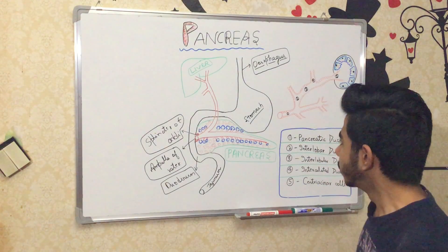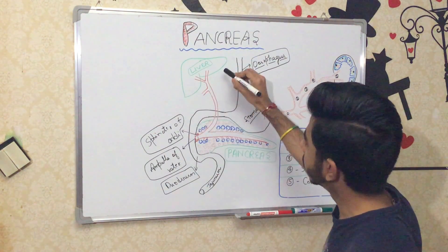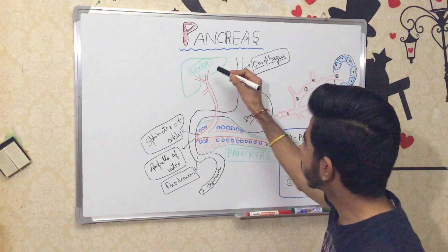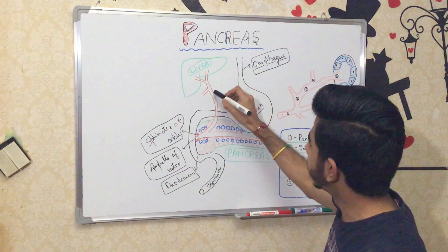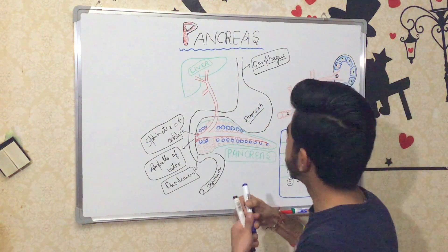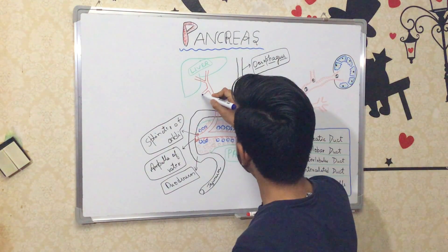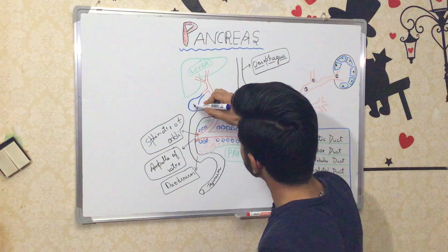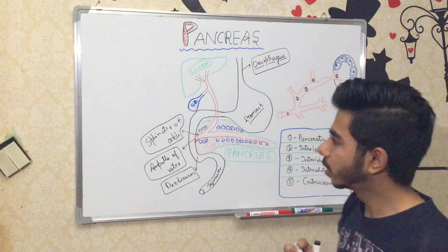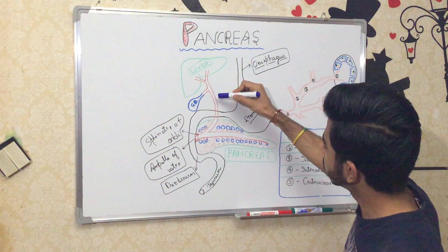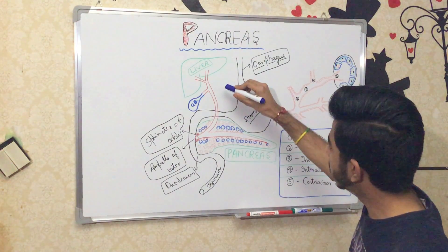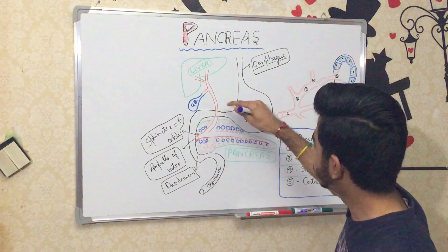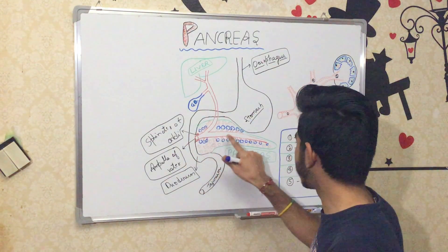Here I have drawn the liver with the left hepatic duct and right hepatic duct, which meet at the common hepatic duct. The cystic duct continues into the gallbladder. Through the cystic duct it meets the common bile duct, and the common bile duct comes downward and meets the pancreatic duct.